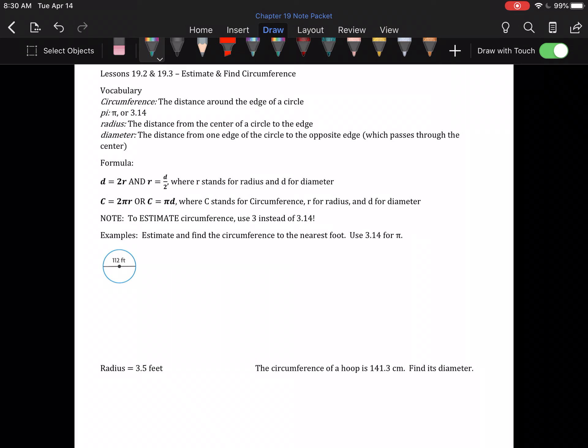Radius and diameter we have talked about before as parts of circles. A radius is the distance from the center to the edge, and the diameter is the distance from edge to edge passing through the center. As a reminder, the diameter is 2 times as long as the radius, and the radius is the diameter divided by 2.